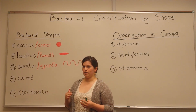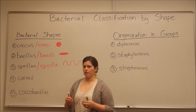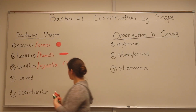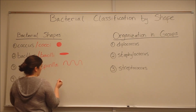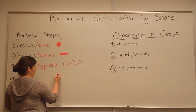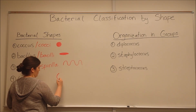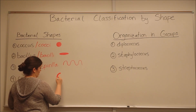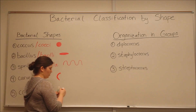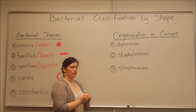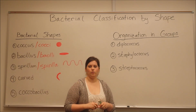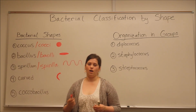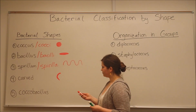There are also curved bacteria. Sometimes you'll also hear them referred to as comma-shaped bacteria. As you can guess, curved bacteria are sort of curved — they look a little bit like a comma. An example of a curved bacterium would be Vibrio cholerae, which causes cholera.